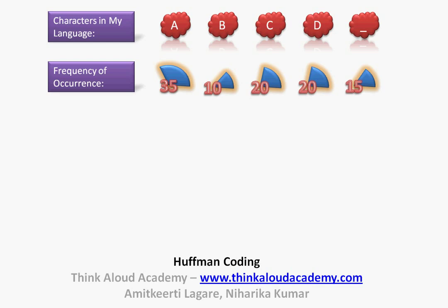Now, suppose I want to encode these alphabets into a set of zeros and ones. If my language just had four characters A, B, C, and D, then I could use only two bits to encode each alphabet. If I had just four alphabets, then A could have been 00, B could have been 01, C could have been 10, and D could have been 11.